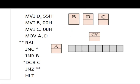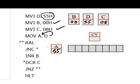The first instruction is MVI D, 55H — storing data 55H in register D. Next, MVI B, 00H clears register B to 00, since we want to count ones. Then MVI C, 08H stores 08 in register C as a counter, because there are 8 bits and we need to rotate the data 8 times. Then MOV A, D transfers register D to register A, so A contains 55H.